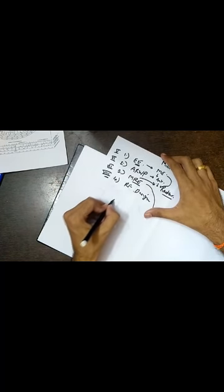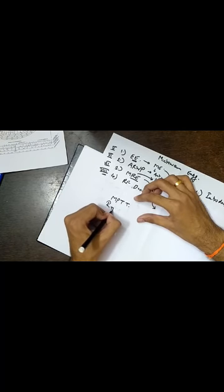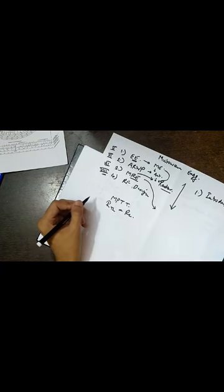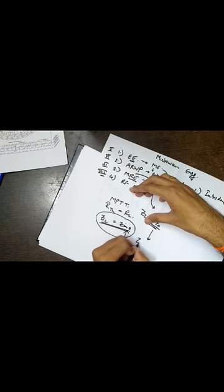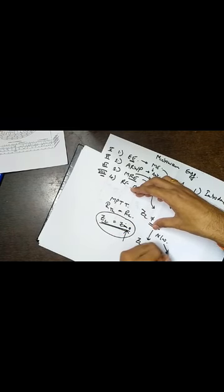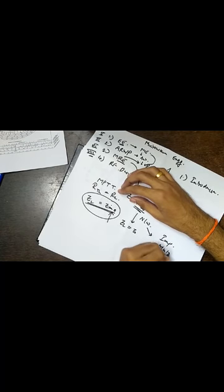The last module introduced us to something called the Smith chart. You have studied maximum power transfer theorem in basic electrical engineering. Maximum power is transferred when R_TH equals R_L. Now when we come to AC sources, resistance becomes impedance. So Z_L should be equal to Z_0 — the characteristic impedance of the transmission line — for maximum power transfer. But usually Z_L is not equal to Z_0 when we design directly.